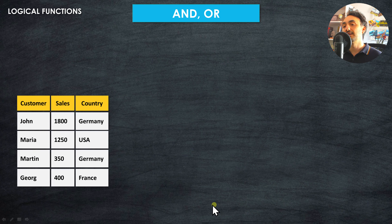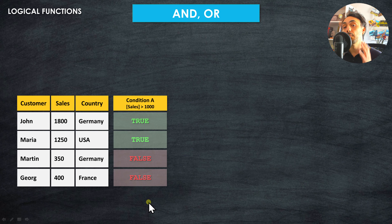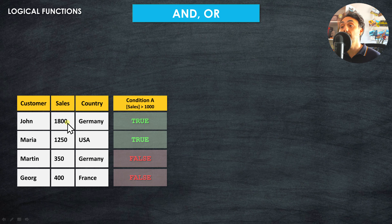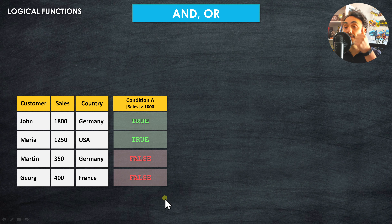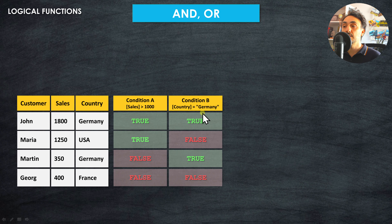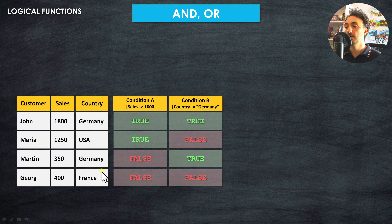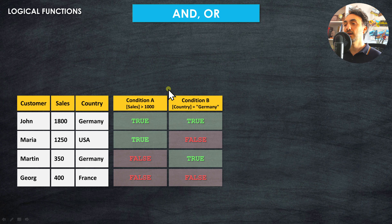We have a table with four customers, their sales information, and their countries. The first condition checks whether sales is higher than 1000. The first two customers get true, and the last two get false because sales is below 1000. The second condition checks whether the country equals Germany. The first customer is from Germany so it's true, the second is false, the third is Germany so true, and the last is false. Now we can combine these two conditions to generate new results.